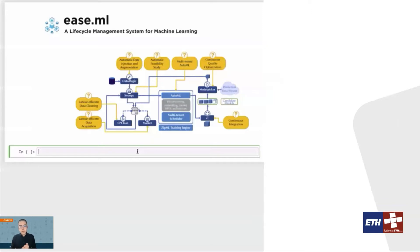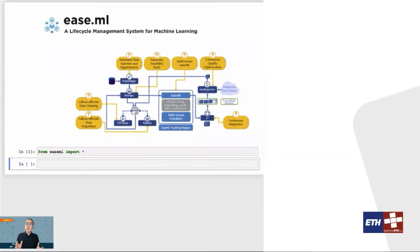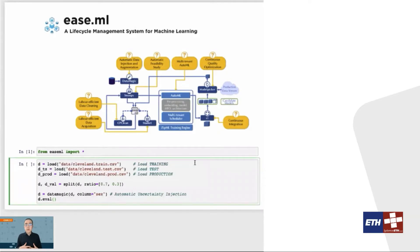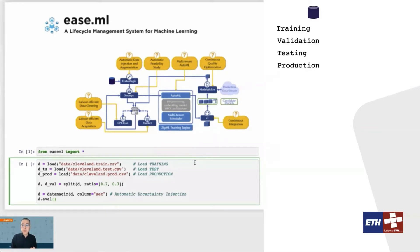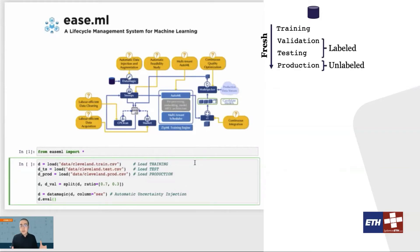ECML is integrated with the Jupyter notebook, which is a very familiar environment to many users. The very first step is to load the dataset. ECML requires four different types of datasets, all having the same data schema but different freshness and quality. We call them the training set, the validation set, the testing set, and the production set. The production set is the freshest one, coming directly from production, which does not have labels. The testing and validation sets are labeled datasets but are less fresh compared with the production set, whereas the training set could come from a very different distribution because of weak supervision and may contain both labeled and unlabeled data examples.